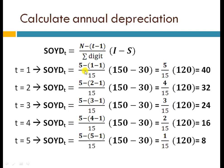For the first year, set little t equal to 1. Calculate the bracket first — N is subtracted by the result of the bracket — then multiply by the sigma digit. After that, multiply by the difference between the initial investment and the salvage value using simple algebra. It turns out to be 40, so the depreciation in the first year is 40 million.